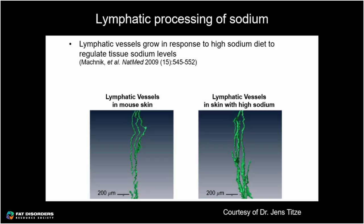One component of lymphatic fluid is sodium, and what we know about how lymphatics process sodium is primarily from basic research in rodent models. This is a study done by our collaborator that showed that lymphatic vessels grow in response to a high sodium diet. The images below show an example of functional lymphatic vessels in a normal mouse fed a normal diet where sodium was not elevated in the tissue, and the images on the right show lymphatic vessels from a mouse fed a high salt diet.